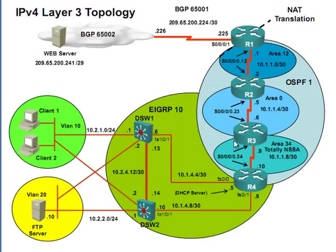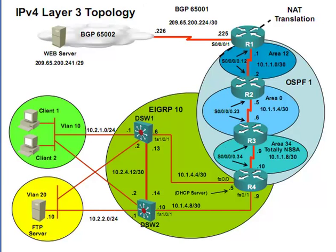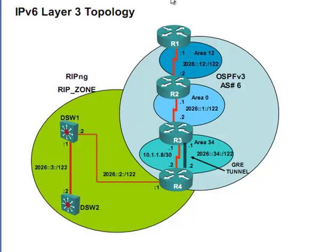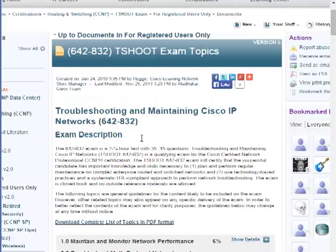If you figure out where the issue is — say you can ping from Router 3 but not from Router 4 — pull up the two routing configs side by side. You can use the screen to bring up two devices at once, do a 'show run,' and compare them side by side. Look at the interfaces that connect to each other and look at the routing protocol configuration on both. Just look for anything out of the ordinary that doesn't match up. That's a good last-ditch effort if you're not sure exactly what you should be looking at.